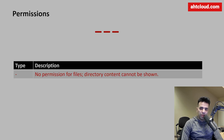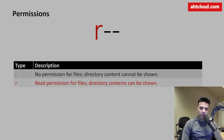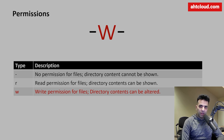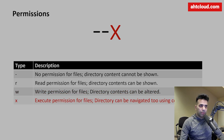Each of these three-character sections follows the same pattern for owner, group, and other users. A dash means no permission. The first character, if not a dash, is 'r' for read — for directories this means you can view the contents. The second character is 'w' for write — for directories this means you can delete, move, or create files within that directory.